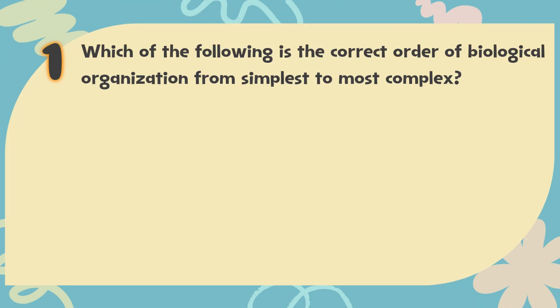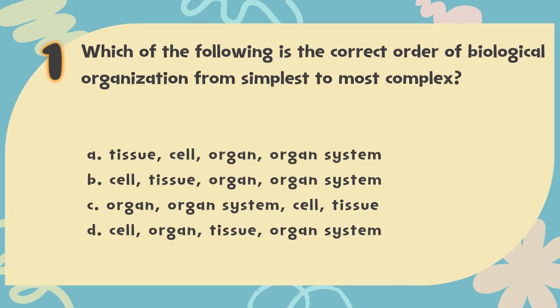Number 1. Which of the following is the correct order of biological organization from simplest to most complex? The choices are: A. Tissue, Cell, Organ, Organ System. B. Cell, Tissue, Organ, Organ System. C. Organ, Organ System, Cell, Tissue. D. Cell, Organ, Tissue, Organ System.